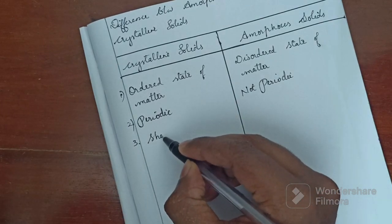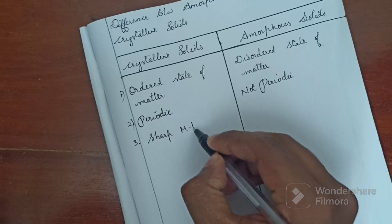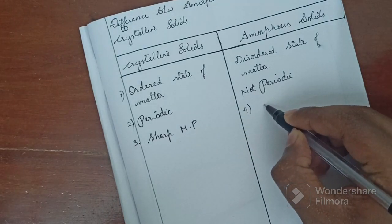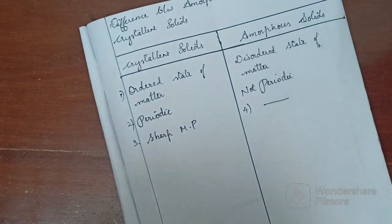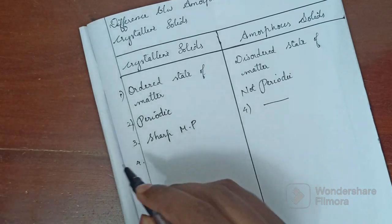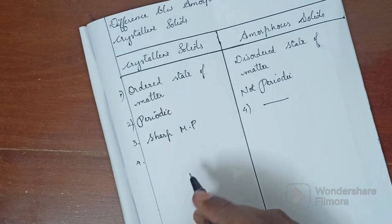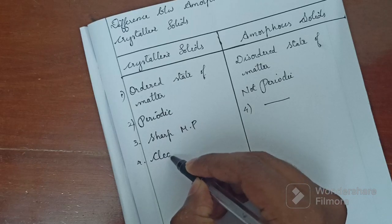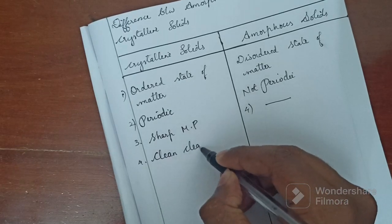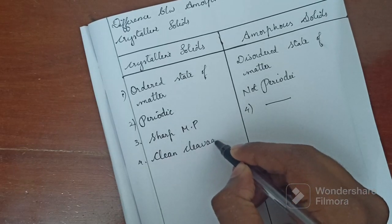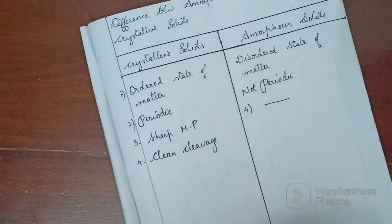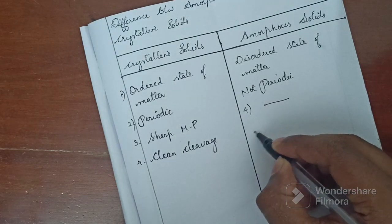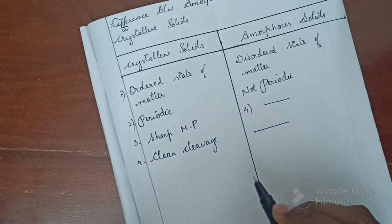Crystalline solids have a sharp melting point. This is a key property. Amorphous solids, however, do not have a clean cleavage — they have an unclean cleave.